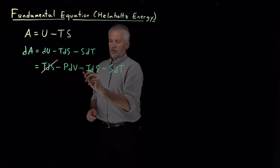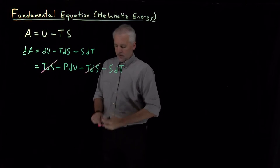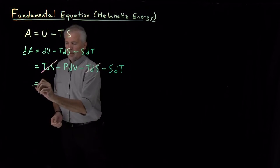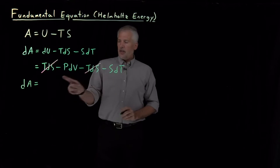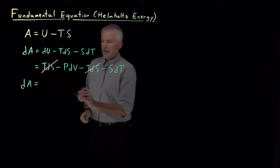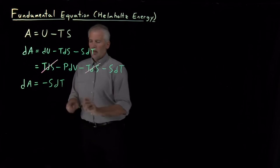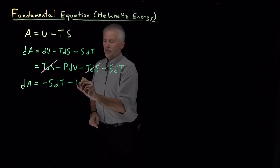T dS cancels this negative T dS and all we're left with is the simple form: differential of the Helmholtz free energy is, I'll swap the order of these, negative S dT minus p dV.